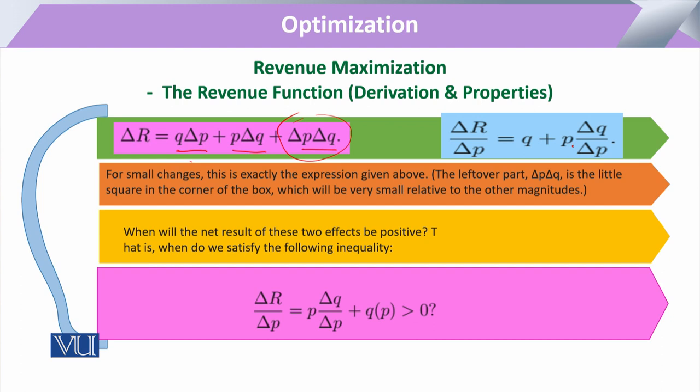So we can now calculate: with the change in output price, what will be the rate of change in our revenue? This depends upon two things — what was the original quantity and what was the original price — and third, the ratio of these two changes. If the initial quantity is very large, a small change may not substantially affect revenue.